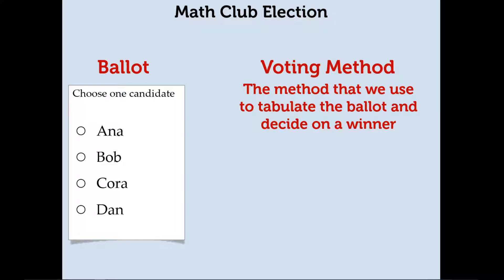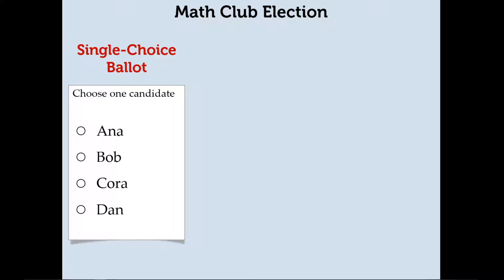But it's a little more complicated than just the ballots and the voting method. This is actually just a single choice ballot — it's the most basic and most common ballot. Single choice, as the name implies, is where you can only choose one person. For example, if a particular voter likes Bob, they can only choose Bob. They can't choose more than one person.